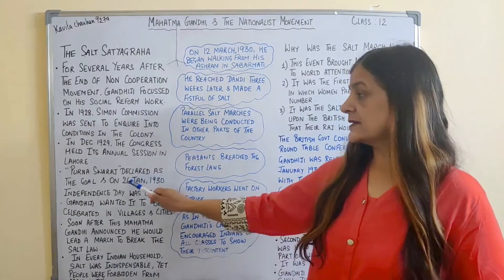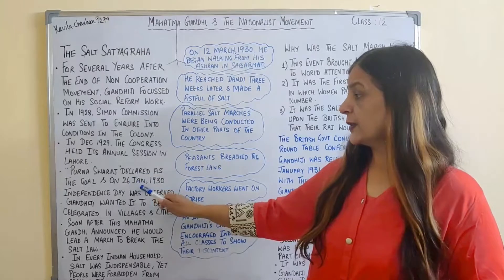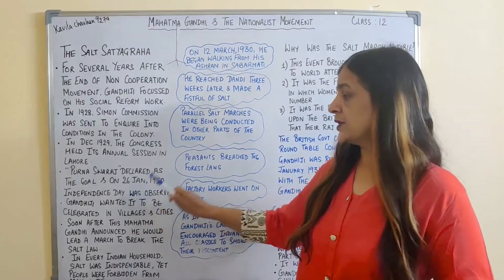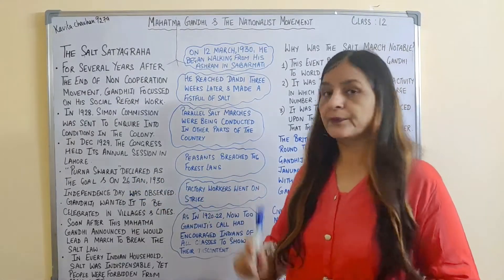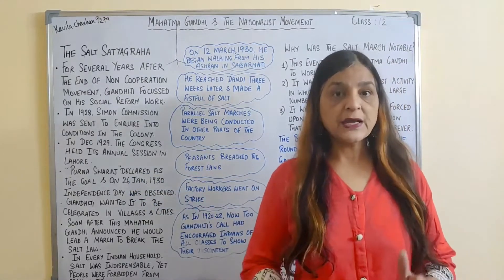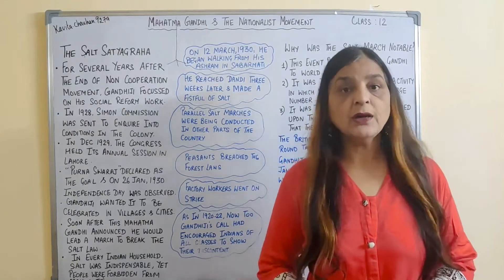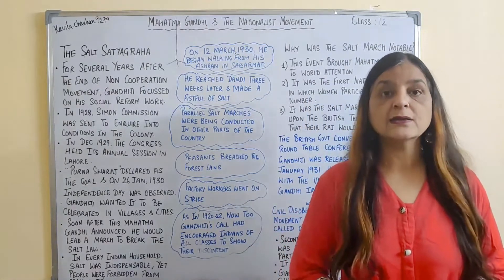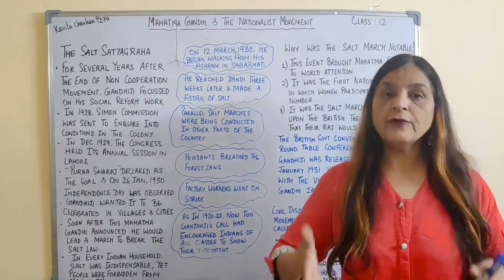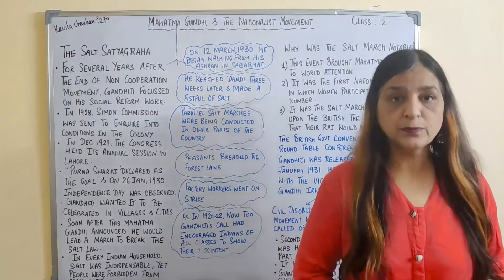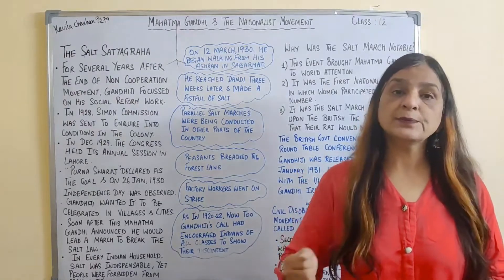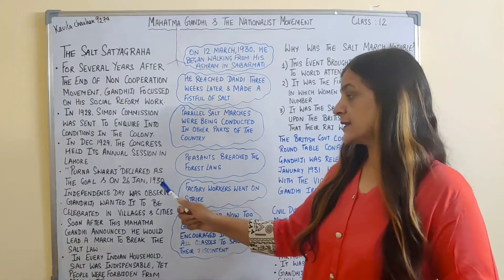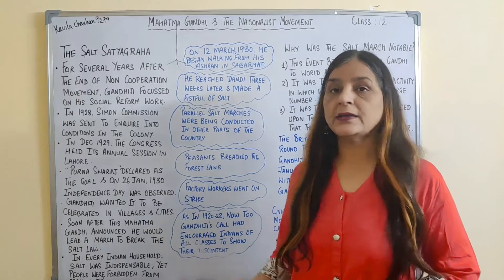Purna Swaraj was declared as the goal of the Freedom Struggle Movement, meaning complete independence. Independence Day was observed on 26th January 1930.